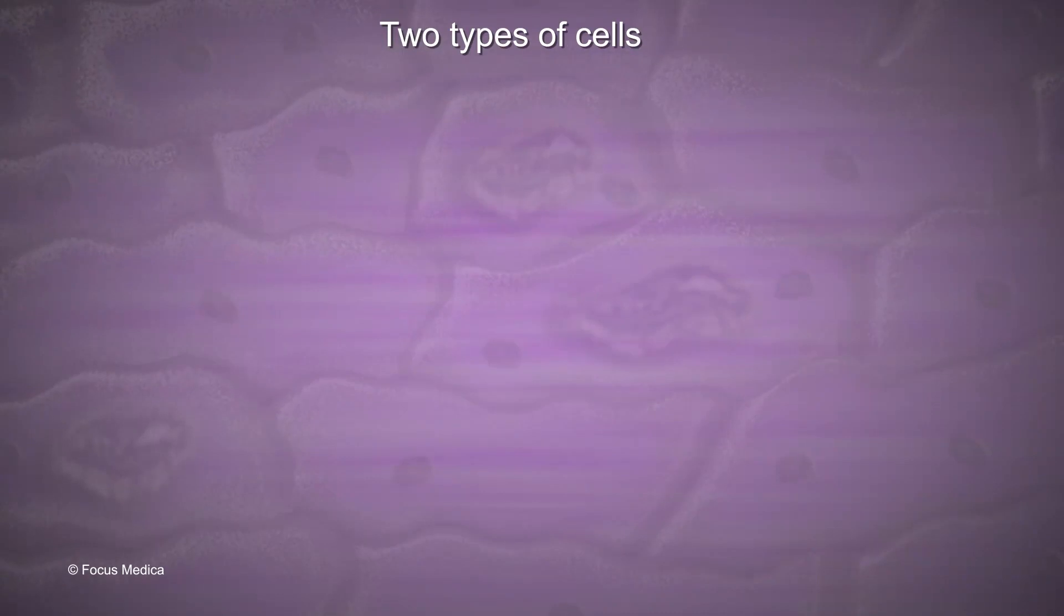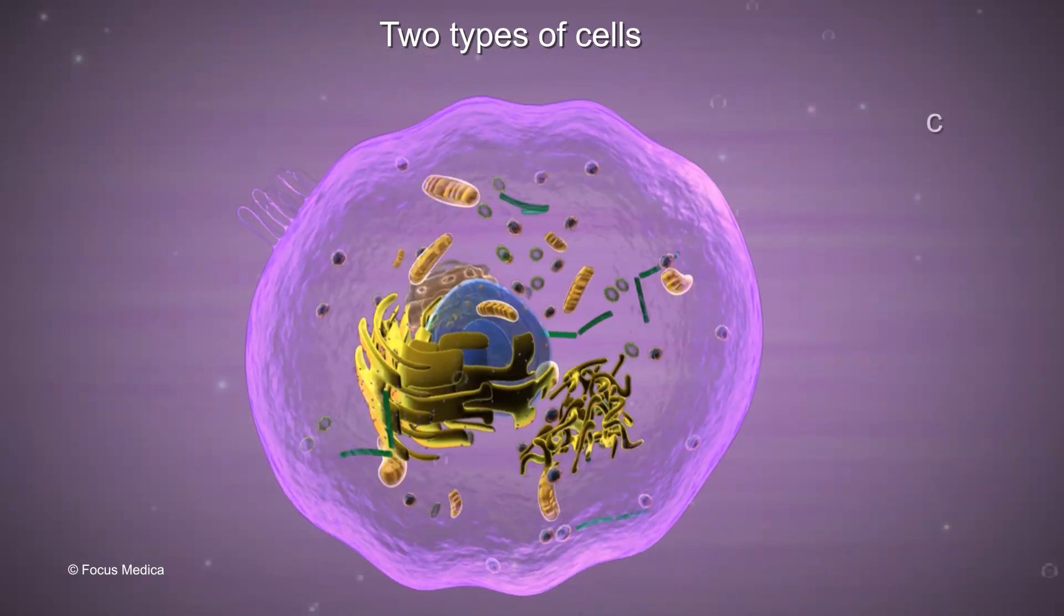There are two types of cells, namely prokaryotic cells and eukaryotic cells.